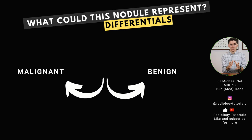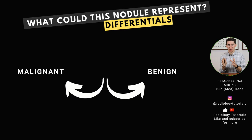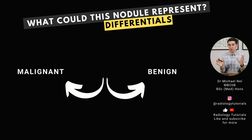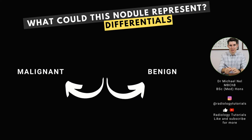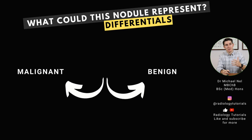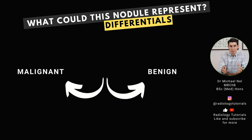When we've identified a nodule, we want to start figuring out what it could represent. Looking at malignant causes, they can be coming from the lung itself — bronchogenic carcinomas, which could be squamous cell, small or large cell, or pulmonary adenocarcinoma. It could also be a distant metastasis — sometimes just a solitary metastasis. It could represent a lymphoma or a carcinoid tumor. There's a whole long list of things that could be malignant lesions within the lung.